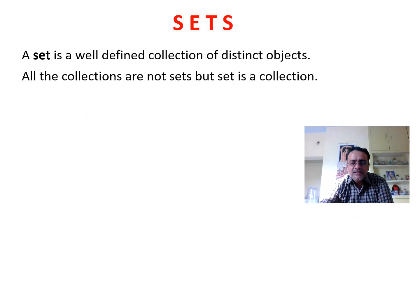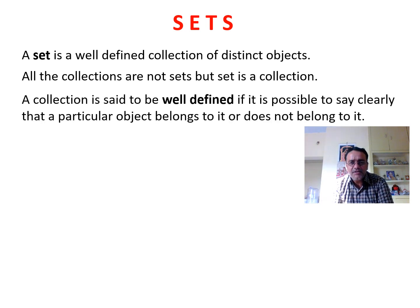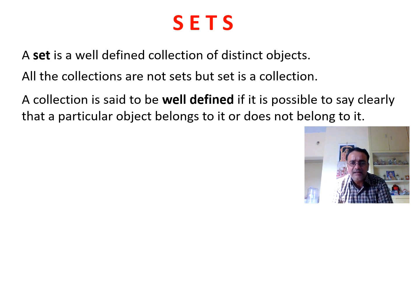A set is a well-defined collection of distinct objects — that is, all collections are not sets, but a set is a collection. A collection is said to be well-defined if it is possible to say clearly that a particular object belongs to it or does not belong to it.